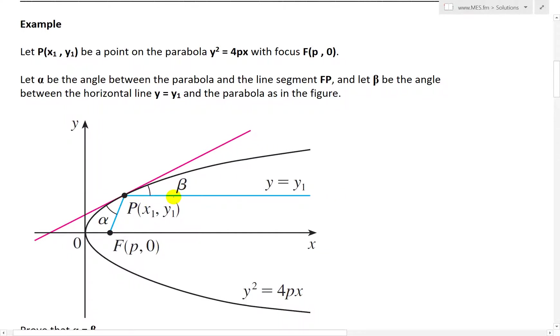Then it says let the angle beta be the angle between the horizontal line y equals y1 — just this straight line — and the parabola, as in the figure. Here's the angle, and if you go closer, this angle is right about there.